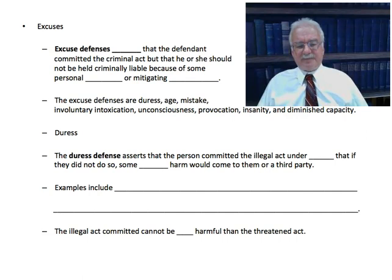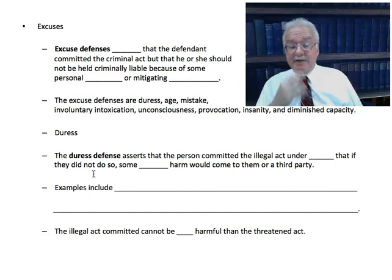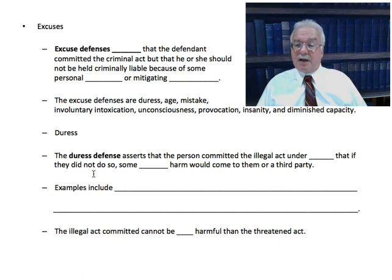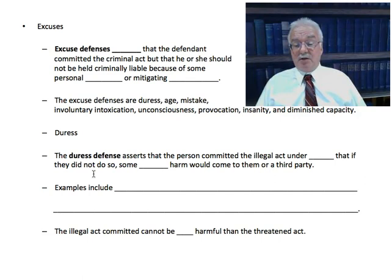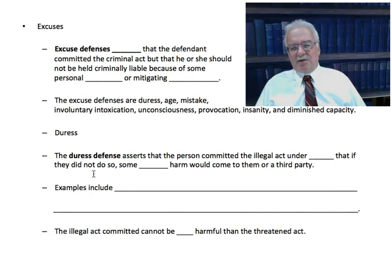The duress defense asserts that the person committed the illegal act under threat that if they did not do so, some greater harm would come to them or a third party. The classic example: you're a bank manager, you come home and find your wife and children tied up with two gunmen who say 'go back to your bank, take all the money from the vault and bring it here, or we'll kill your family.' This threat — killing your family — is greater than the crime of grand larceny, so you would not be guilty because you were acting under duress. Remember, the illegal act committed cannot be more harmful than the threatened act.